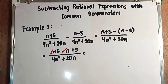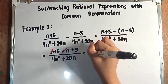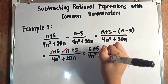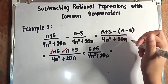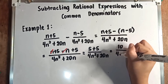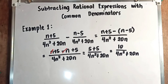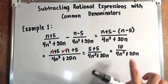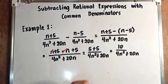What remains is 5 plus 5 over 4n squared plus 20n. So 5 plus 5 gives us 10, making it 10 over 4n squared plus 20n. Are we already finished? Not yet, because we still need to simplify by factoring out each numerator and denominator.